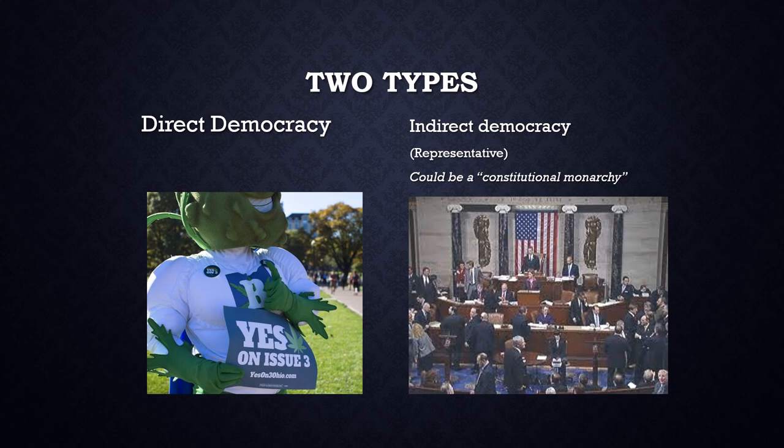Democracy comes in different varieties as well. One way that the people can rule is for voters to vote on laws directly. This is called direct democracy. Contrary to popular belief, direct democracy exists to some extent in many countries around the world, including the United States. In the U.S., citizens are often asked to vote on local taxes, such as school levies or bond issues. In Ohio, as well as many other states, we can also vote on some proposed state laws and proposed amendments to our state constitution. The picture on the left comes from a direct democracy campaign in 2015 to legalize recreational marijuana — Ohio voters voted against that proposed law.